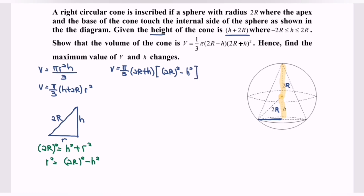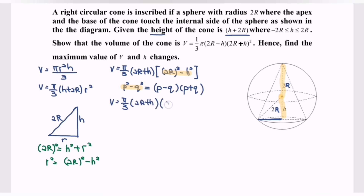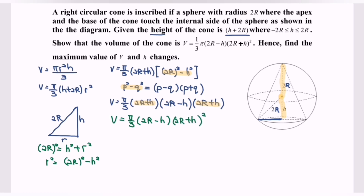We make use of the difference of squares identity: p² − q² = (p − q)(p + q). Applying this, (2R)² − h² = (2R − h)(2R + h). Notice that we have a common factor (2R + h), so we can simplify. The volume becomes V = (π/3)(2R − h)(2R + h)², and we have now shown this result.